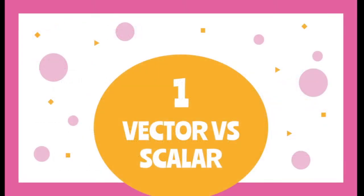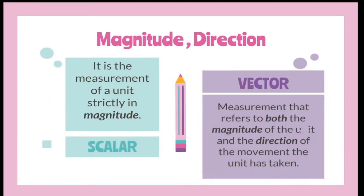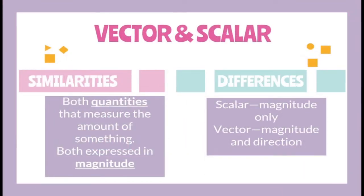Now let's proceed to the differences between scalar and vector quantities. Scalar is the measurement of a unit strictly in magnitude alone, while vector quantity is the measurement that refers to both the magnitude of the unit and the direction of the movement that the unit has taken. The similarities between vector and scalar quantities are: both quantities measure the amount of something, and both are expressed in magnitude. The differences: scalar measures magnitude only, while vector measures magnitude accompanied with direction.